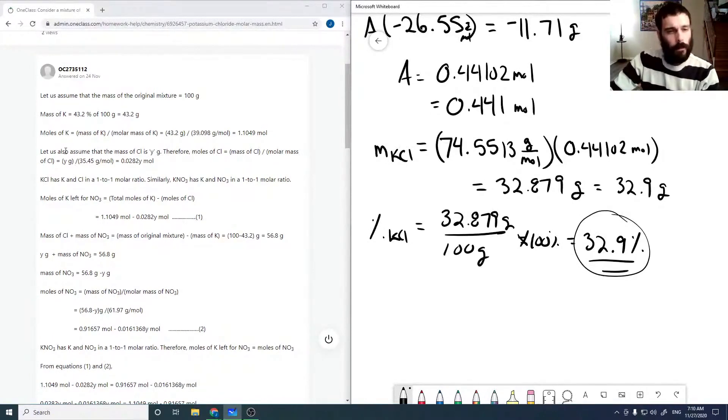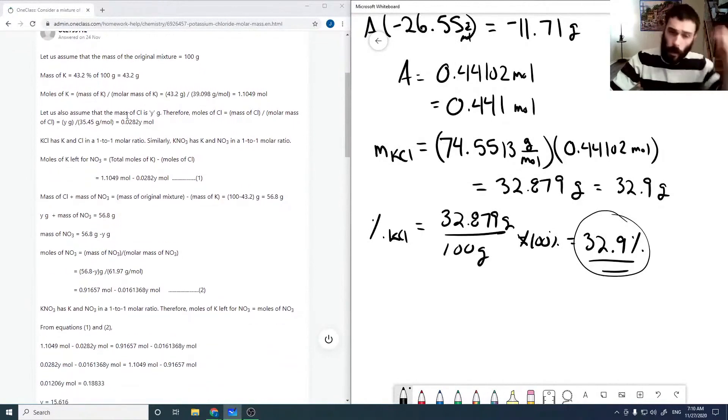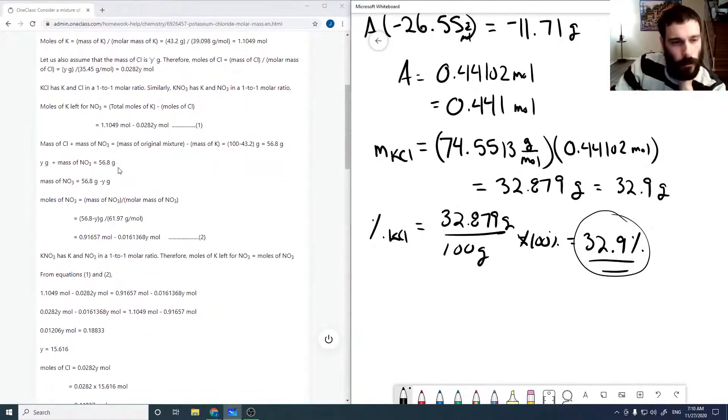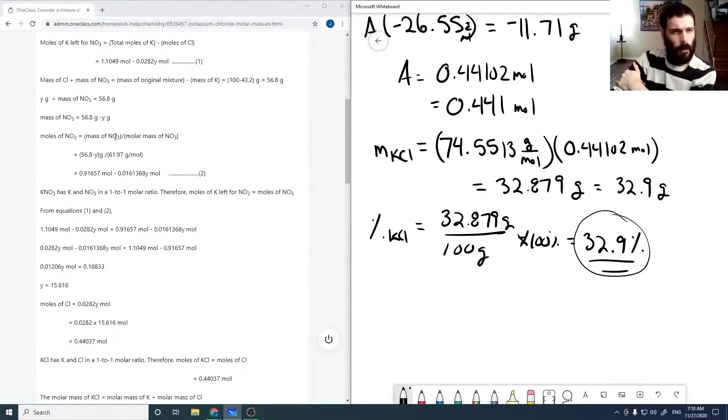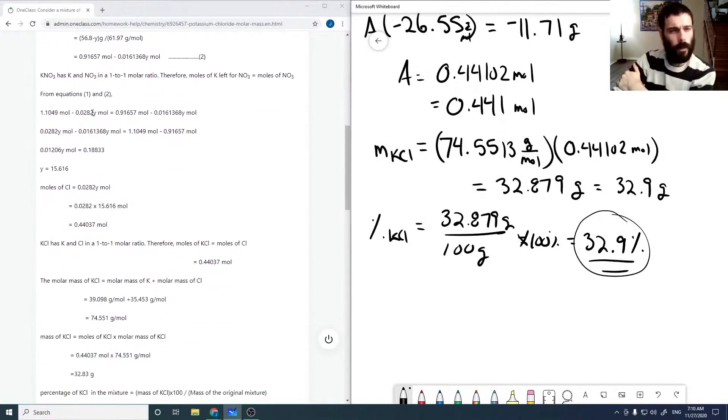Let's also assume that the mass of chlorine is Y. Okay, so then they've added in a few extra steps. Okay, moles of nitrate. So I don't think that's necessary, but it's doable. It's probably just cyclical, if I were to guess, as long as they don't make any mistakes.